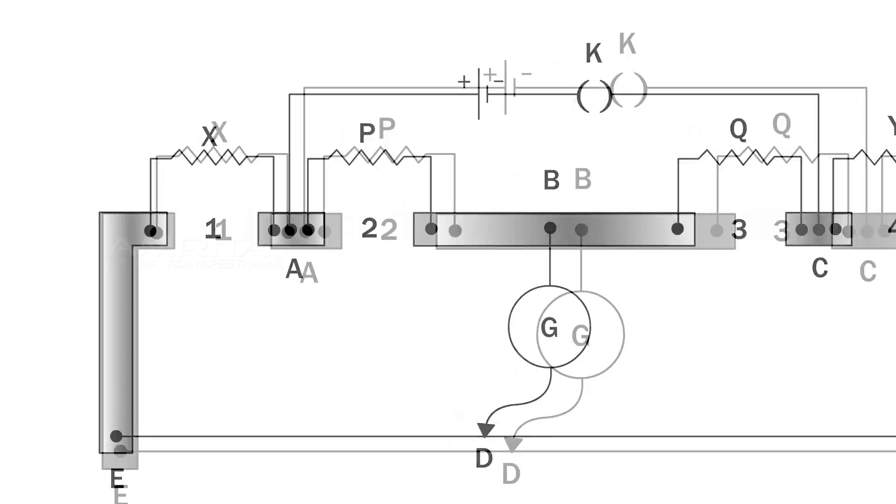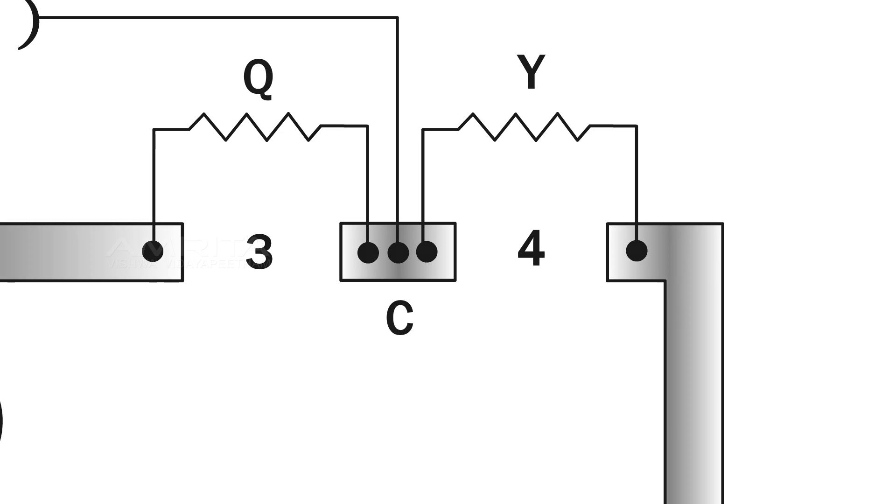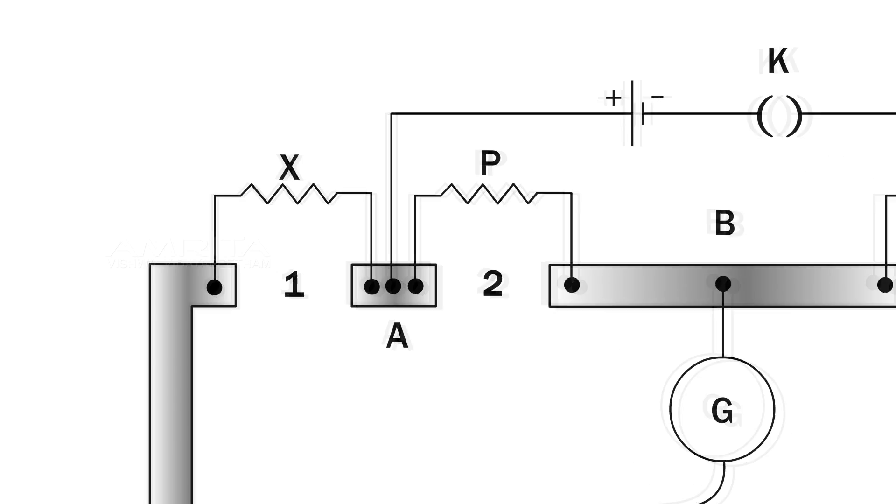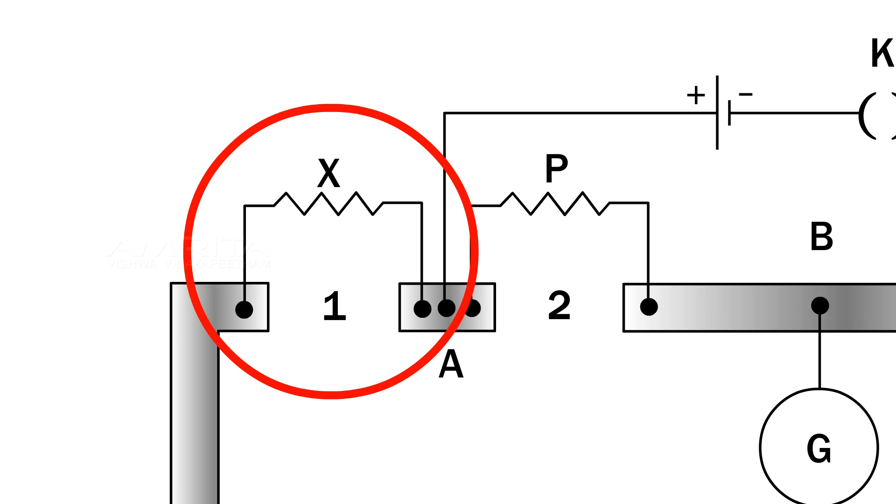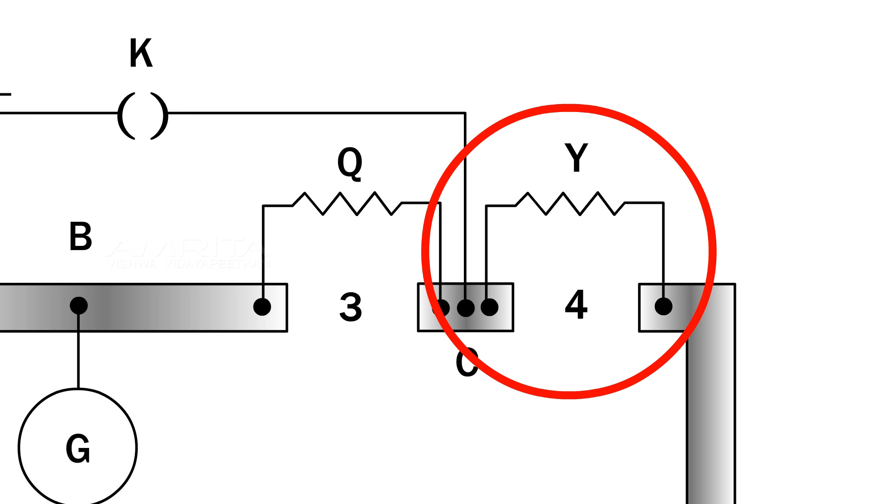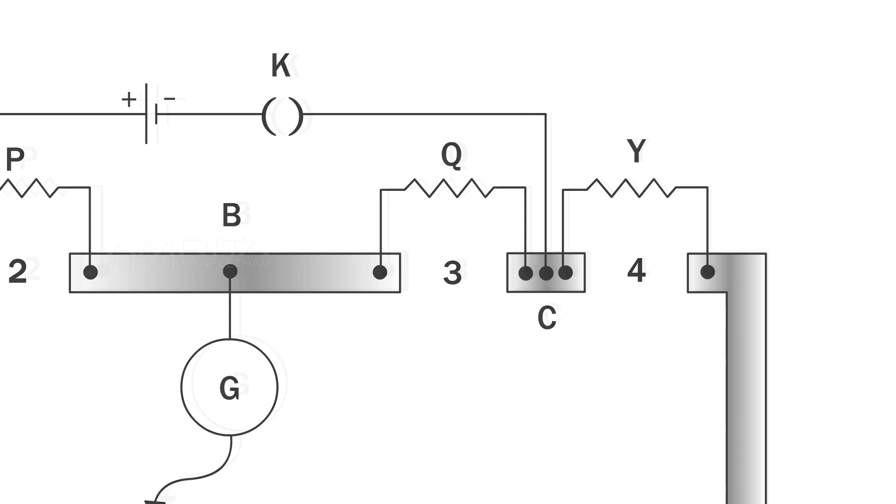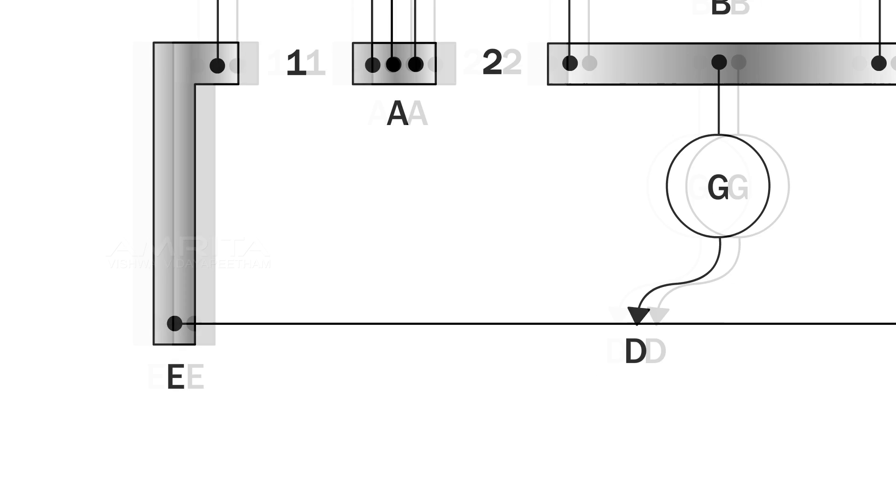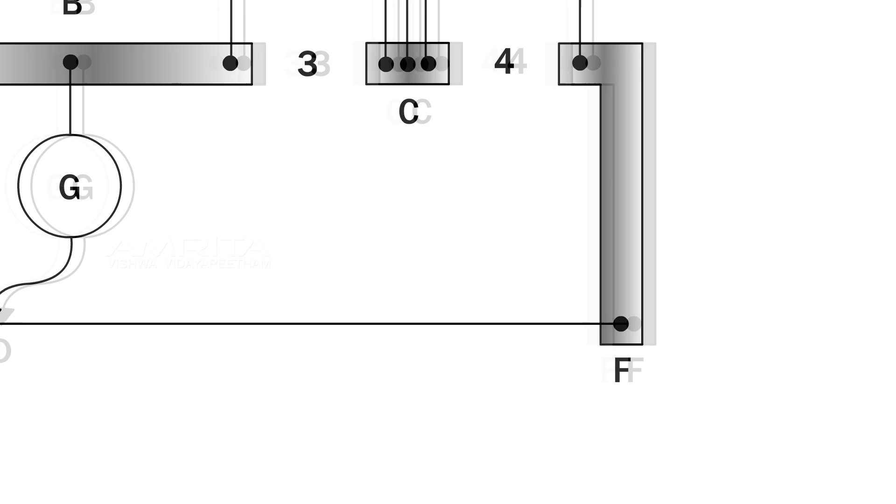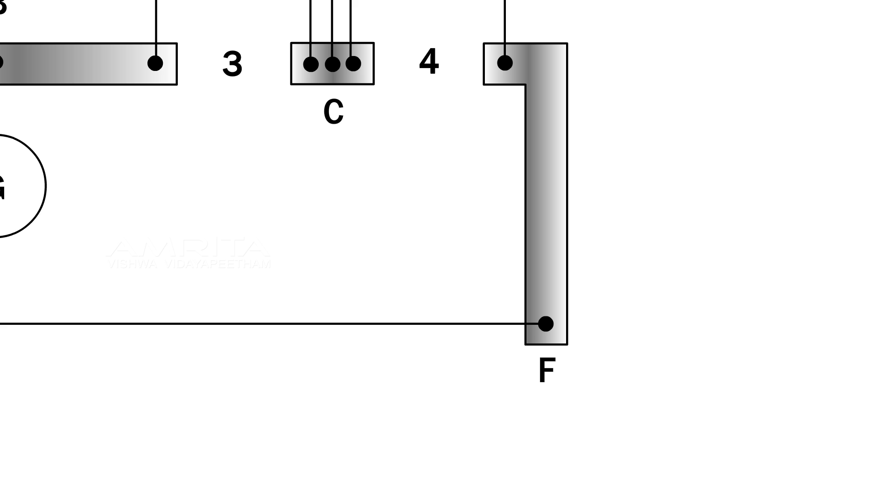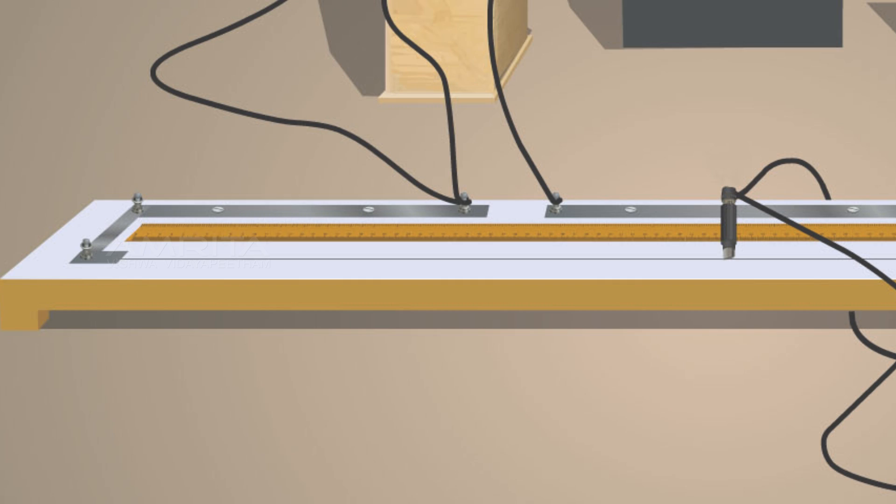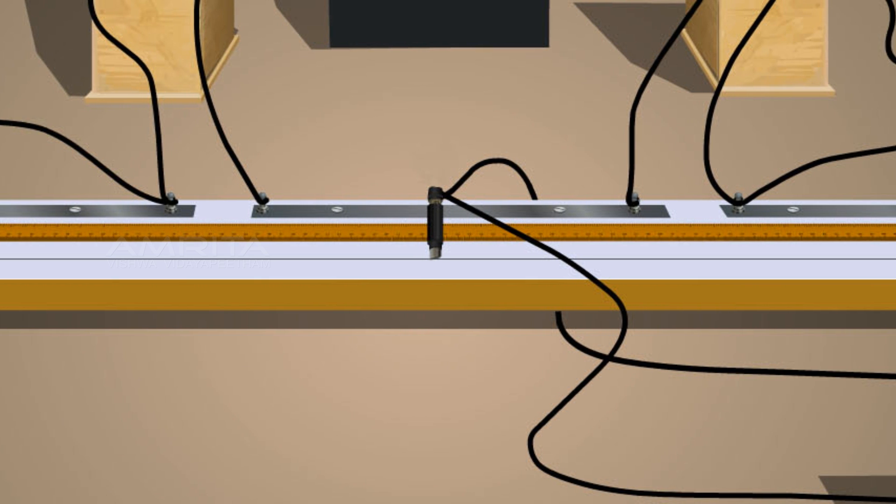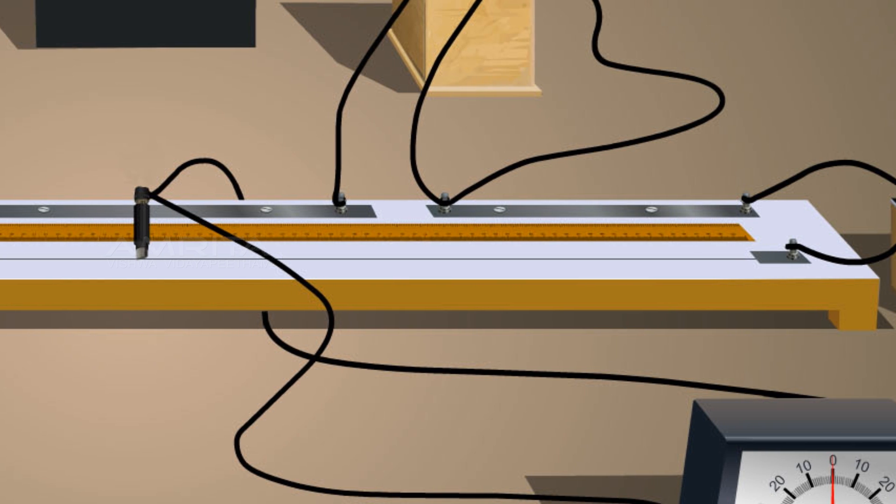The standard low resistance P and Q of 2 ohms each are connected in the inner gaps 2 and 3. The known resistance, a fractional resistance box X, and the unknown resistance Y whose resistance is to be determined are connected in the outer gaps 1 and 4 respectively. A 1 meter long resistance wire of uniform area of cross section is soldered to the ends of two copper strips. Since the wire has uniform cross-sectional area, the resistance per unit length is the same along the wire.